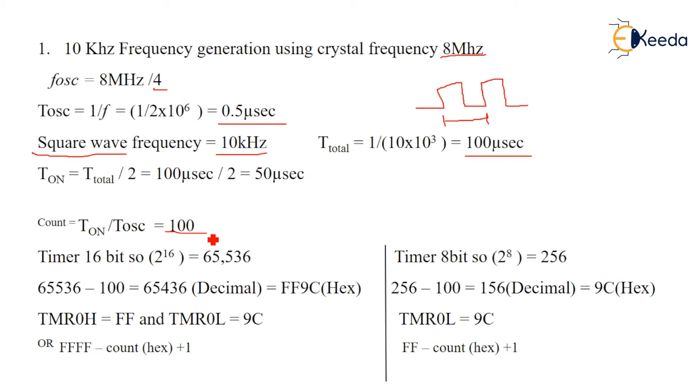If you go for the 16-bit timer, the 16-bit timer gives how much combination? 2 raised to 16, which is 65,536. So the total count we have calculated earlier, subtract this from 65,536, you will get the decimal value. Convert into hex value - this lower 8-bit and upper 8-bit will be stored into TMR0L and TMR0H respectively. Like TMR0L will hold 9C and TMR0H will hold FF. If this 100 decimal value is converted into hex value earlier, the formula will be different: FFFF minus count in hex plus 1.